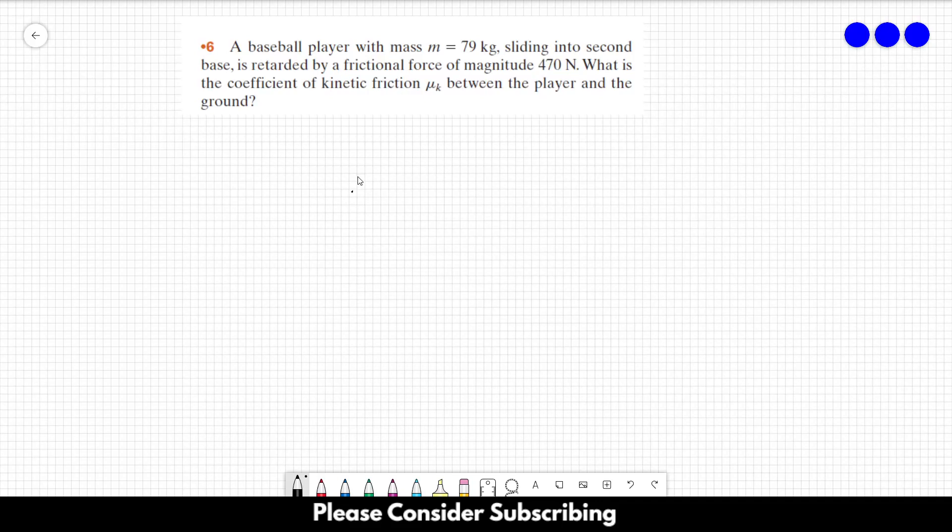Number six: A baseball player with mass equal to 79 kilograms sliding into second base is retarded by a frictional force of magnitude 470 newtons. What is the coefficient of kinetic friction μ_k between the player and the ground?